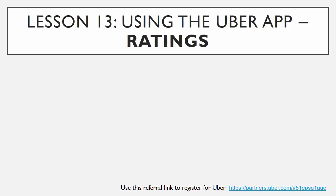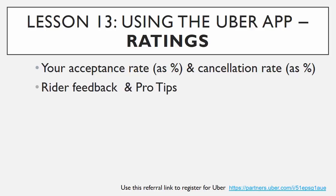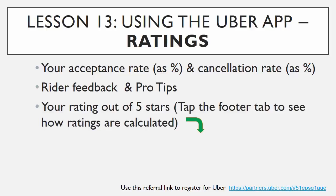Using the Uber app — there's also a ratings tab. It shows you your acceptance rate as a percentage. We talked about the acceptance rate before, and it also shows you your cancellation rate. If you accept a ride and then need to cancel it for one reason or another, it'll show your cancellation amount. Those two stats are very important to remember and keep track of. It also shows your rider feedback, pro tips, and your rating out of five stars.